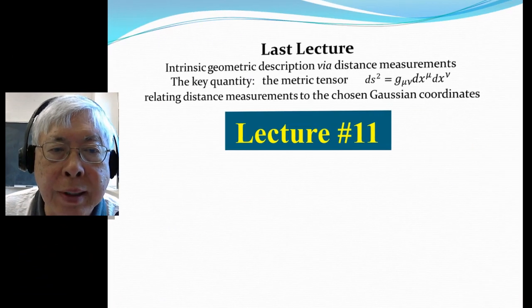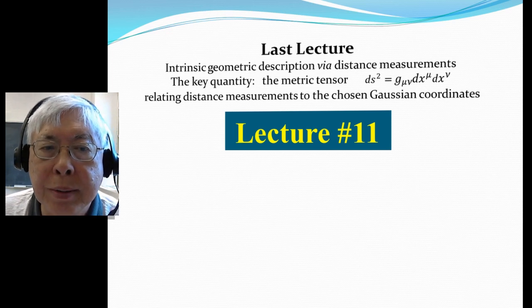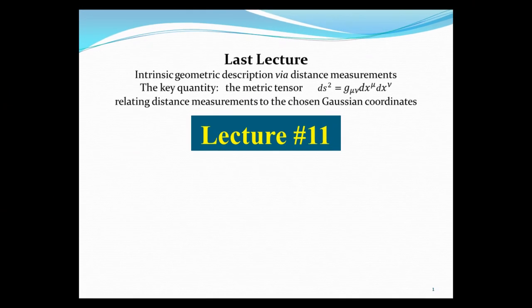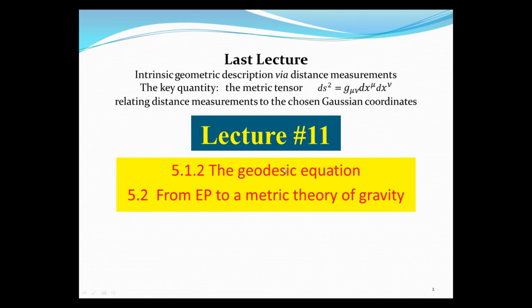Lecture 11 will continue to discuss the geometry of curved space. In the last lecture, we showed that we can have a so-called intrinsic geometric description by distance measurements. The key quantity is the metric tensor, which relates the distance measurements ds squared to the chosen coordinates x mu, x nu. In this lecture, we're going to show a concrete example of how knowing the metric can determine geometry — in particular, how we can derive the geodesic equation from the knowledge of the metric. From this, we'll discuss how the equivalence principle led Einstein to the idea of a metric theory of gravity.